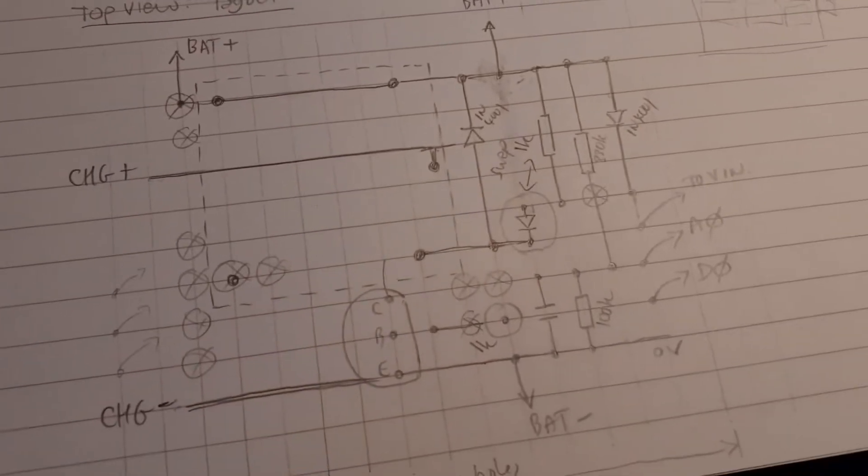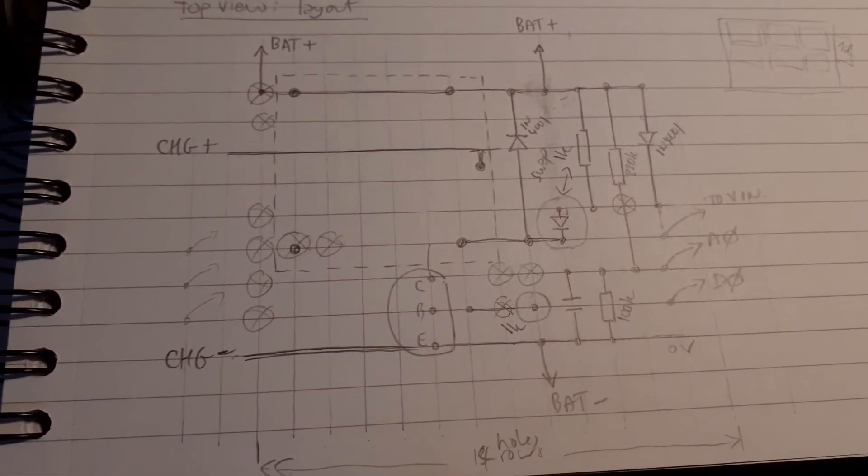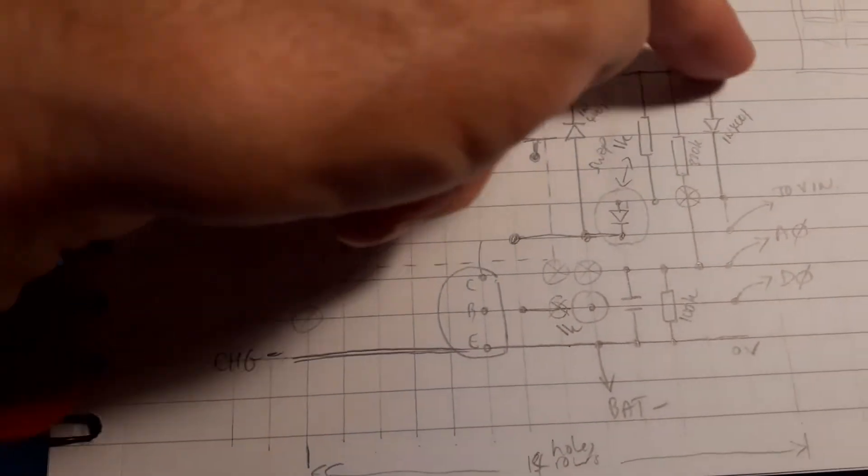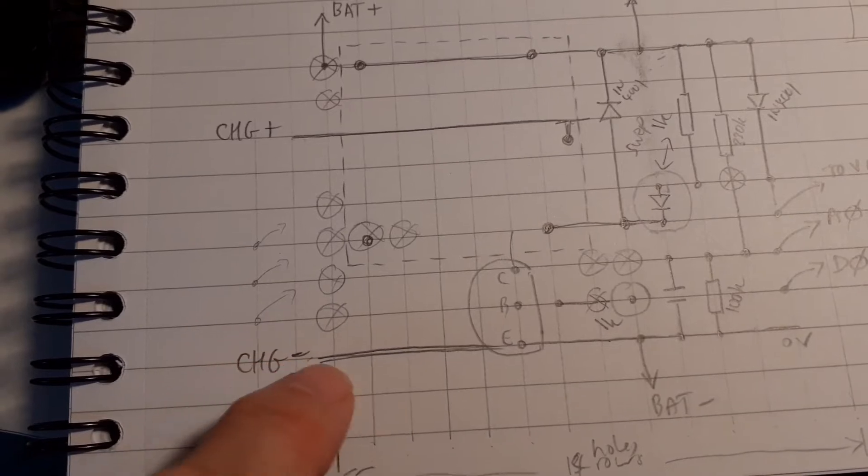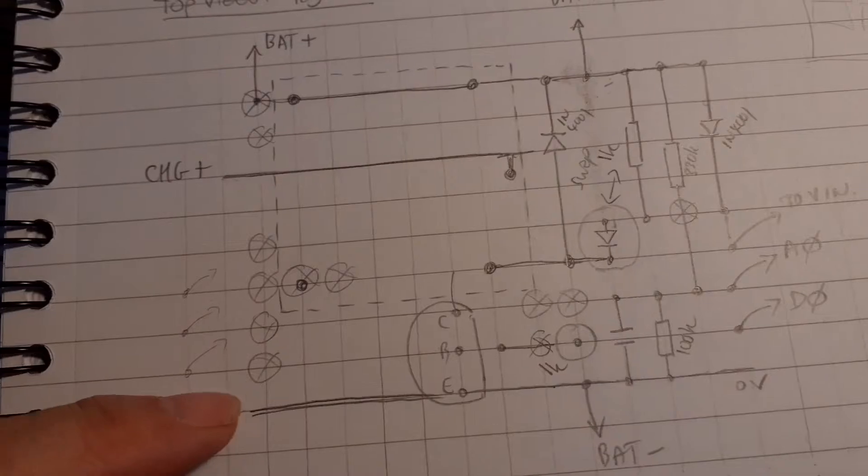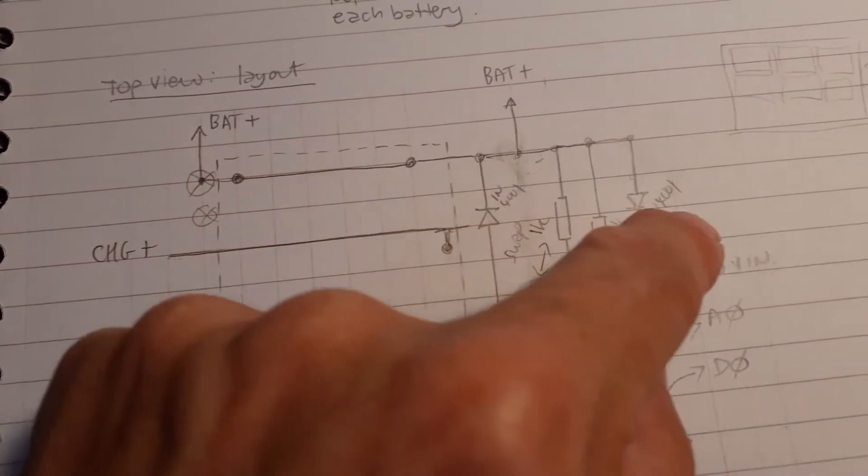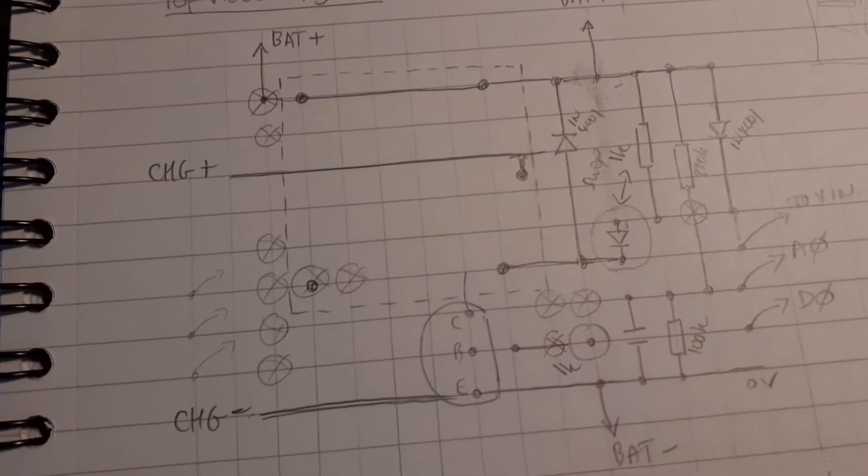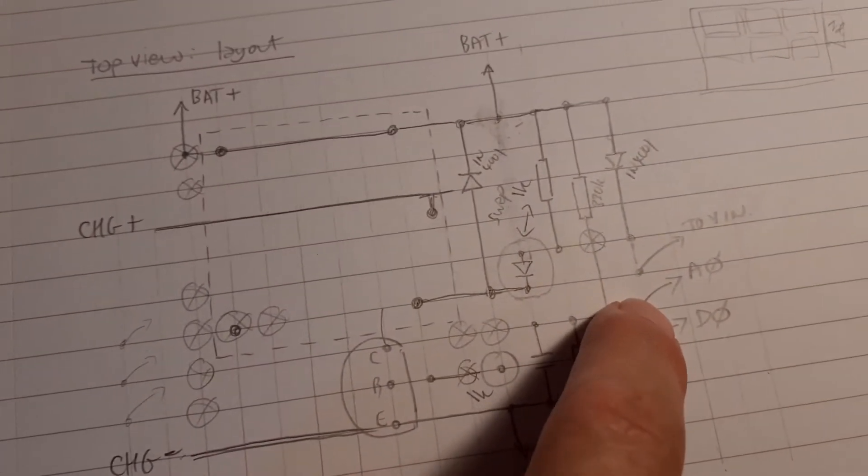So I came up with a rough layout diagram of how to arrange it on a strip board with the copper strips going horizontally that way, which meant I could have a common connection all the way through with each of these, one after the other, common connection all the way through for the negative, and a common connection all the way through for the charger positive, and then take off the pins for controlling the relay and for measuring the battery voltage.